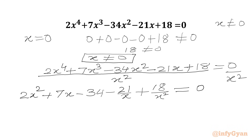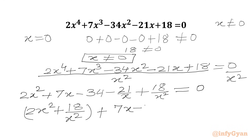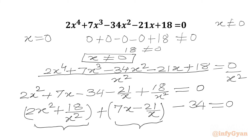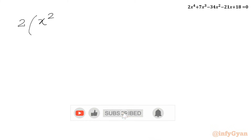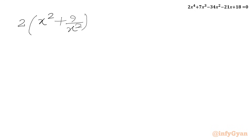Now we collect the first and last terms in one bracket: (2x² + 18/x²), and the second and second-last terms in another bracket: (7x - 21/x), minus 34 = 0. Taking 2 common from the first bracket and 7 common from the second, we get: 2(x² + 9/x²) + 7(x - 3/x) - 34 = 0.